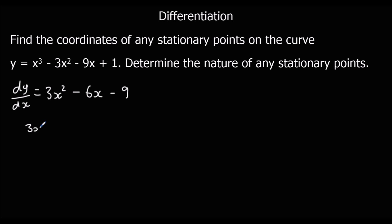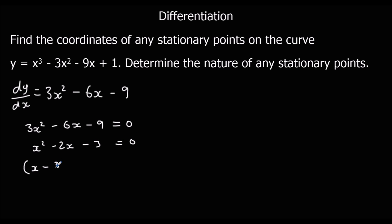So we have 3x² minus 6x minus 9 equals zero. We divide by 3 first, then factorise. So x is 3 and x is minus 1 — those are the x coordinates of the stationary points.